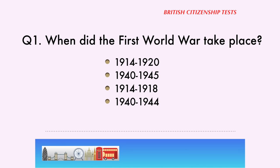Question 1. When did the First World War take place? From 1914 to 1920, from 1940 to 1945, from 1914 to 1918, from 1940 to 1944. The correct answer is: from 1914 to 1918.